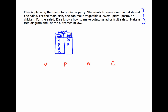Now we go to the next event. The first step is to list the outcomes of the first event, then go to the next event. How many outcomes do I have there? Two. So I'm going to draw two lines below each letter, and then list those outcomes below each: potato salad and fruit salad under every main dish option.